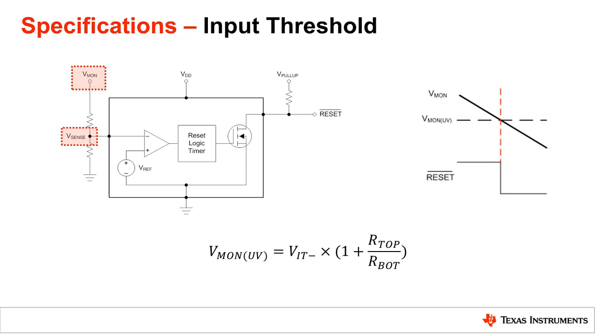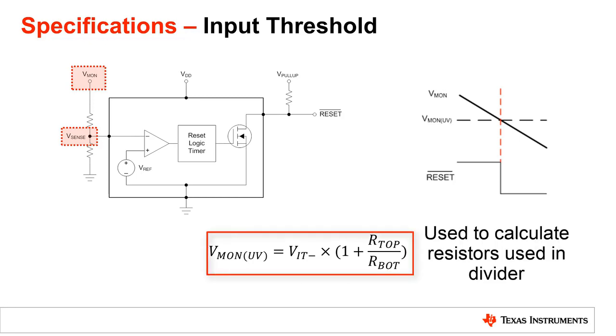Similar to how Vsense needs to stay above VIT-, Vmon will need to stay above a certain threshold voltage called VmonUV to avoid the supervisor from asserting a reset. This undervoltage threshold for the monitored voltage is dependent on the system's requirement or what minimum voltage level is needed on the voltage rail for the system to function correctly. The user would select VmonUV based off the system requirements and then use the following equation to calculate what sensed resistors are needed to achieve that value.